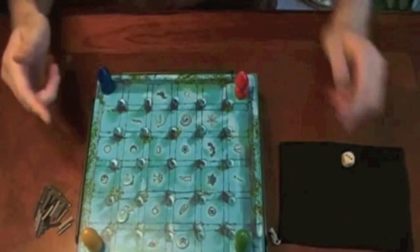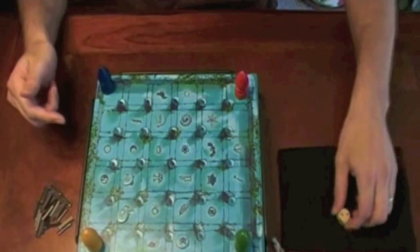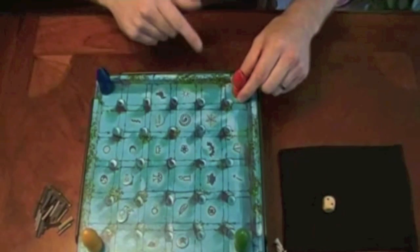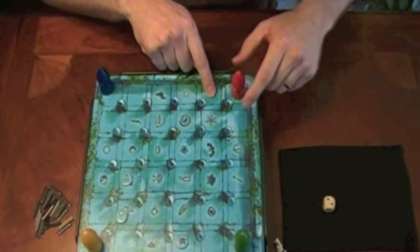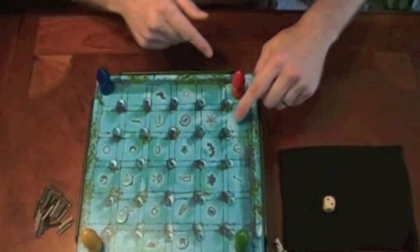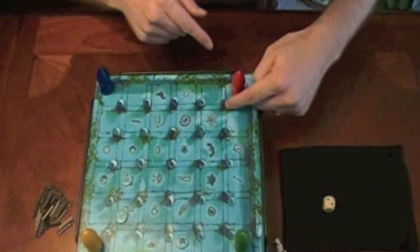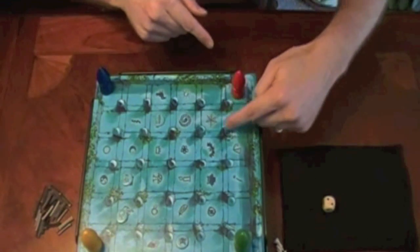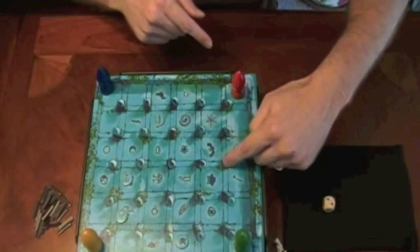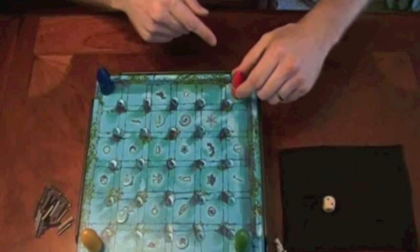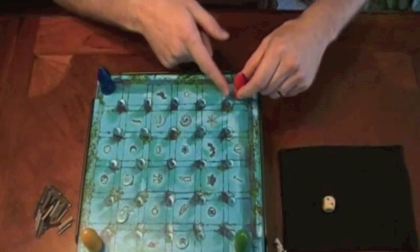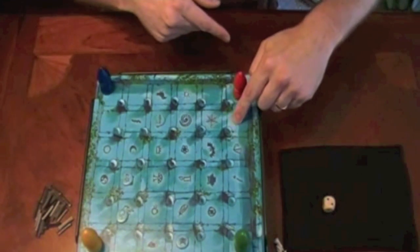And once you've got them all set up, you simply will roll the dice. So, in this case, I'm red and I got a 2. So, I can either move to here first or to here first. When I play with little kids, I always make them declare where they're going because underneath, remember, all these little areas are the possible wooden blocks that are going to knock my ball bearing off of the magnet.